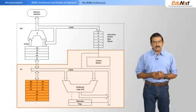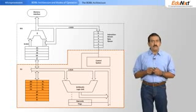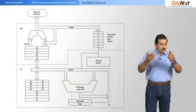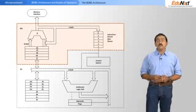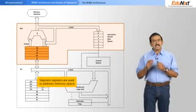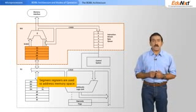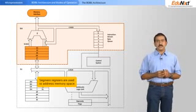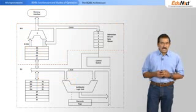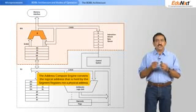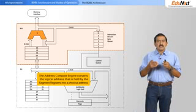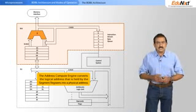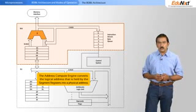BX, CX, and DX are all general purpose registers used by the ALU to perform arithmetic and logical operations. Moving to the bus interface unit, you first have a set of segment registers. These segment registers are used to address memory space — either ROM, RAM, or the I/O space. There is an address compute engine within this, which converts the logical address held by the segment registers into a physical address exposed to the outside world.